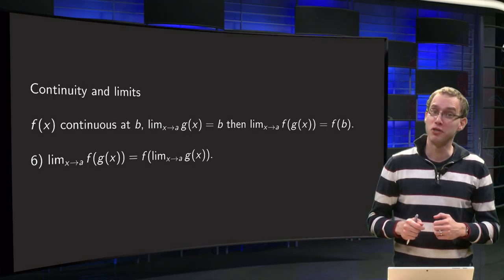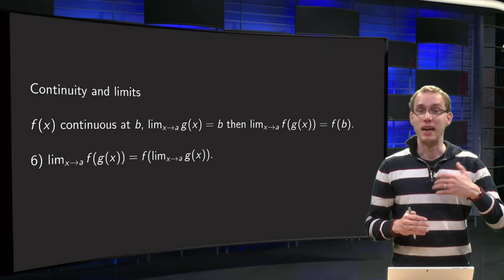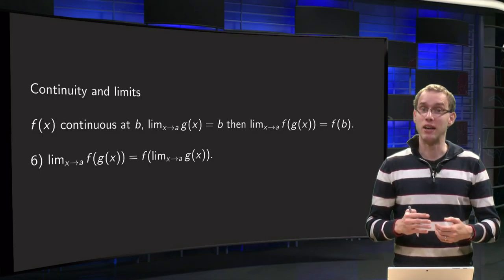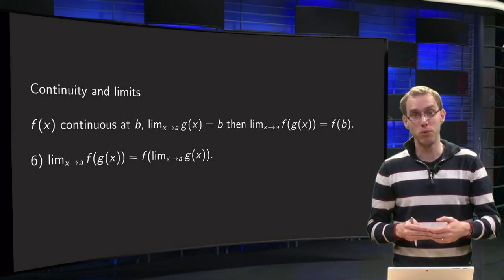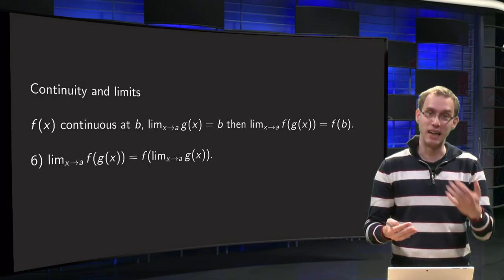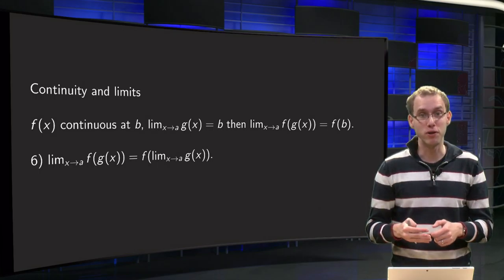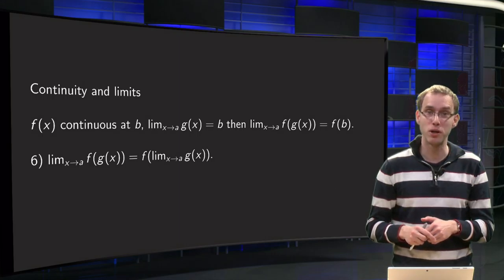All five limit rules you learned are actually quite similar. They allow you to interchange limit and another operation. For example, the sum rule: instead of taking first the sum and then the limit, you may take the limits first and add up the result, so take the limit before the sum.